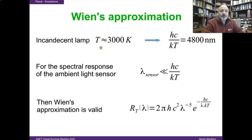For example, for an incandescent lamp, the temperature is of the order of 3000 K, so the reference wavelength of the maximum of radiation is almost 5000 nanometers, or 5 micrometers.